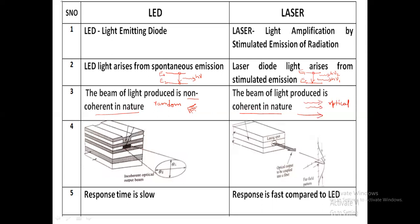Regarding construction, this type of laser is called an edge-emitting laser, and another type is the Fabry-Perot laser. The type of output from an LED is called Lambertian output, whereas for laser the output obtained is a very narrow and directional output.